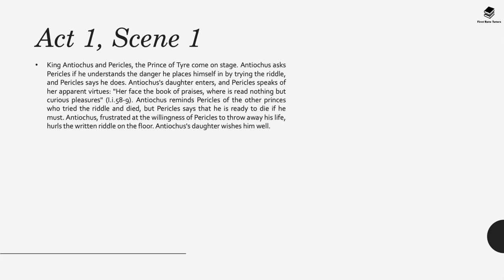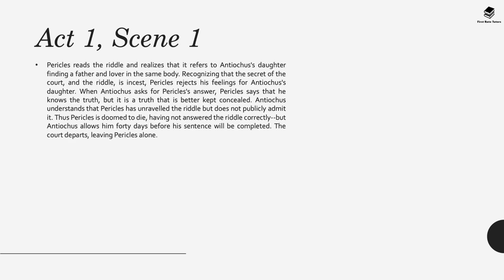King Antiochus and Pericles, the Prince of Tyre, come on stage. Antiochus asks Pericles if he understands the danger of trying the riddle, and Pericles says he does. Antiochus's daughter enters and Pericles speaks of her apparent virtues — the play says her face is 'the book of praises where is read nothing but curious pleasures.' Antiochus reminds Pericles of the princes who tried and died, but Pericles says he is ready to die if he must. Antiochus hurls the written riddle on the floor, and his daughter wishes Pericles well.